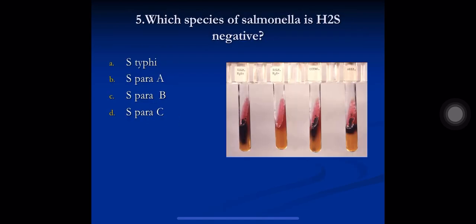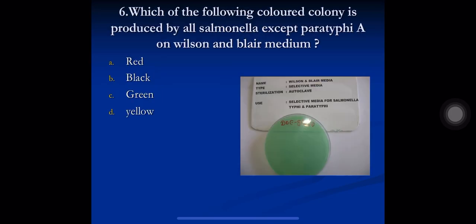Question 5: which species of Salmonella is H2S negative? A) S. typhi, B) S. paratyphi A, C) S. paratyphi B, D) S. paratyphi C. All Salmonella are H2S positive except S. paratyphi A, which is H2S negative. The correct option is B) S. paratyphi A.